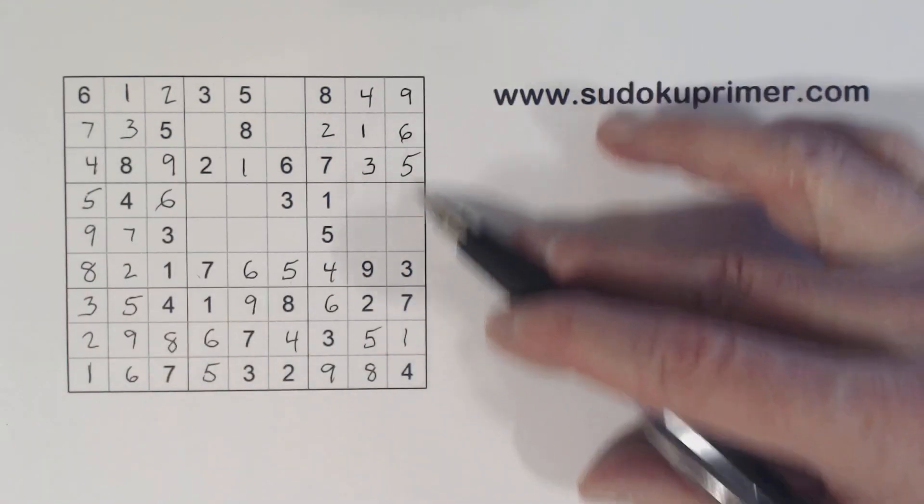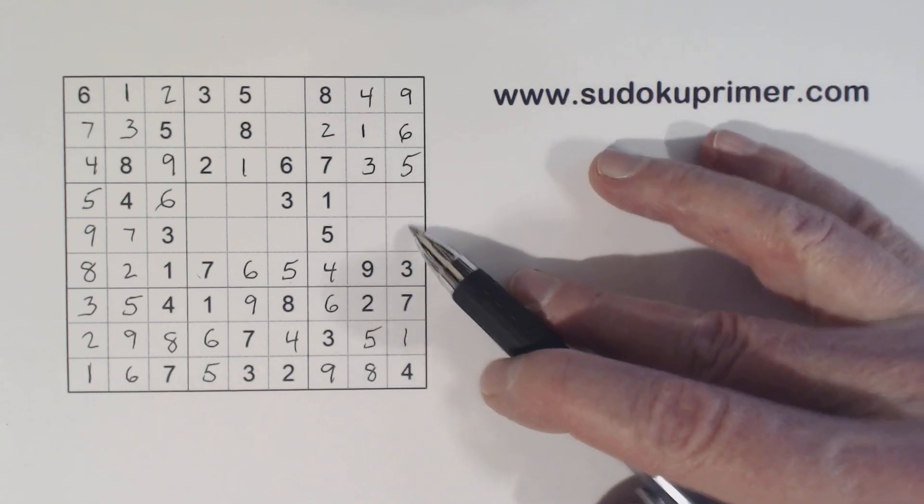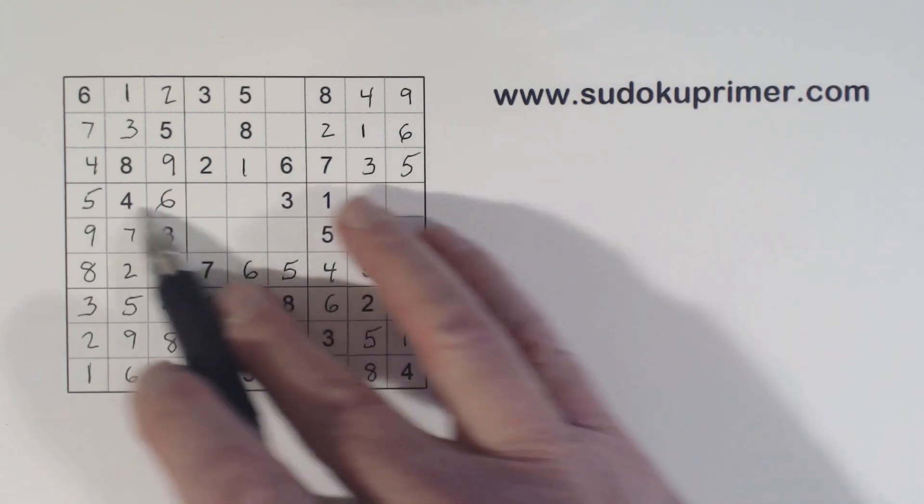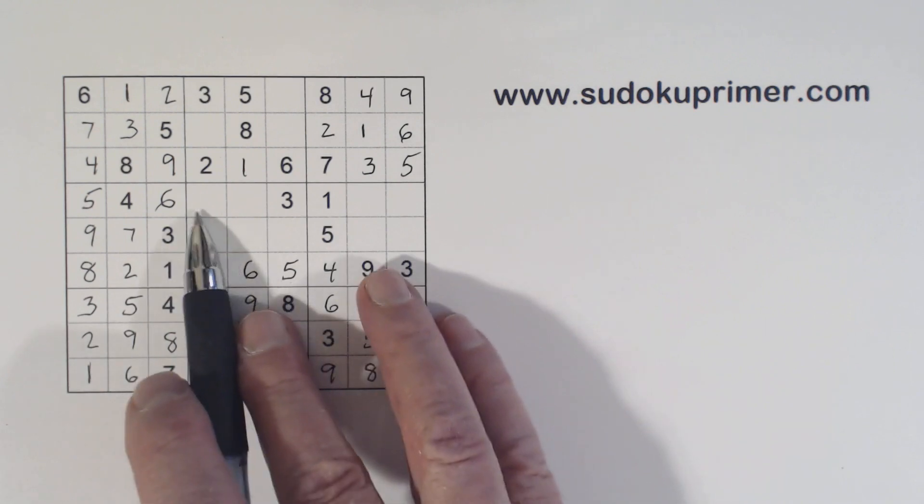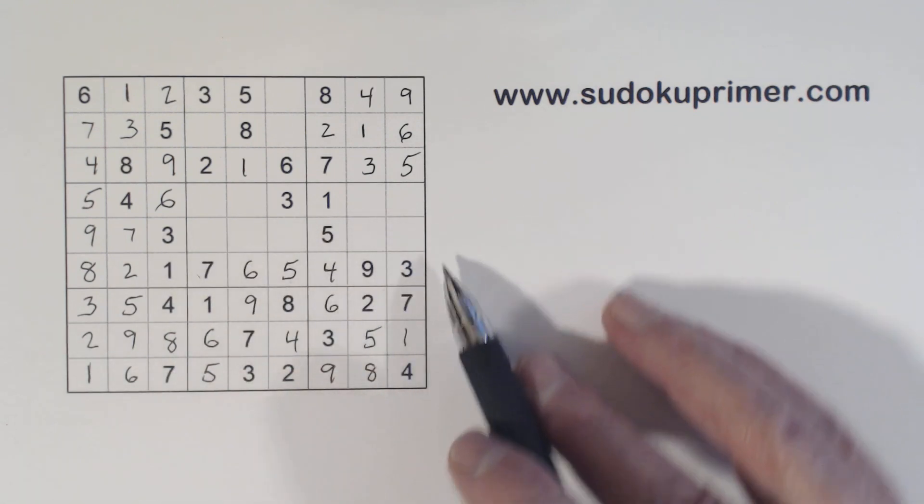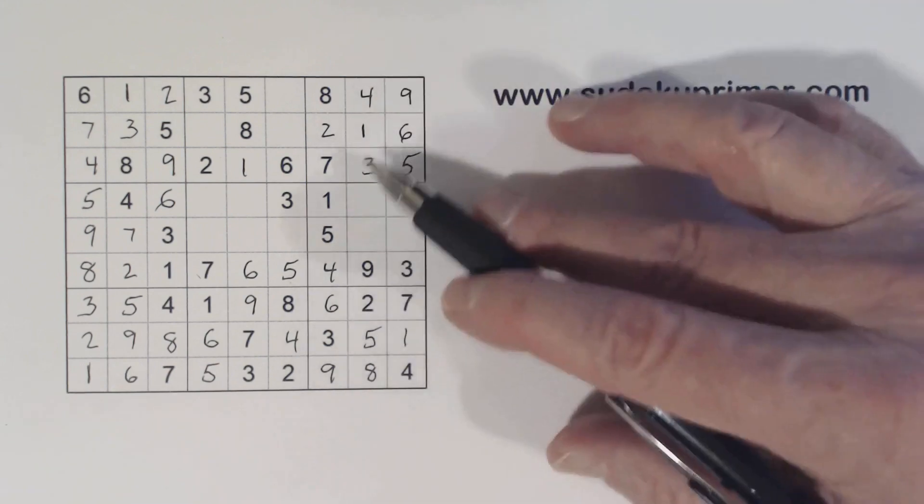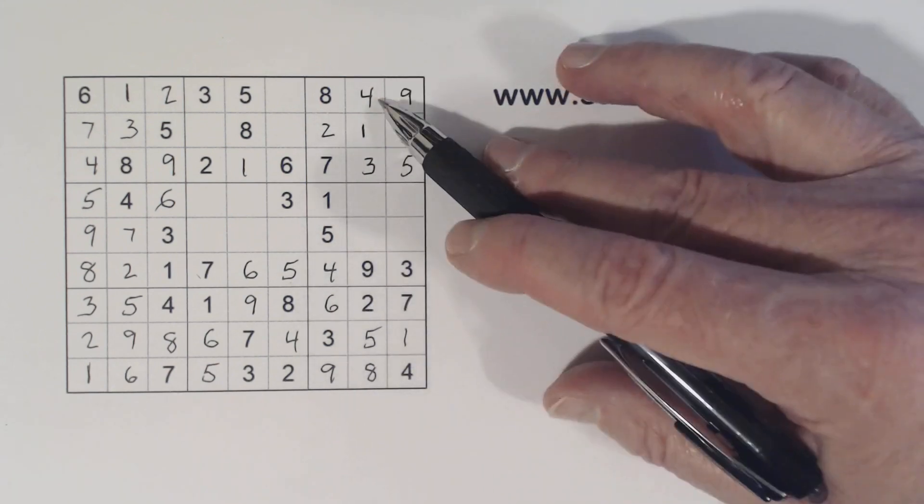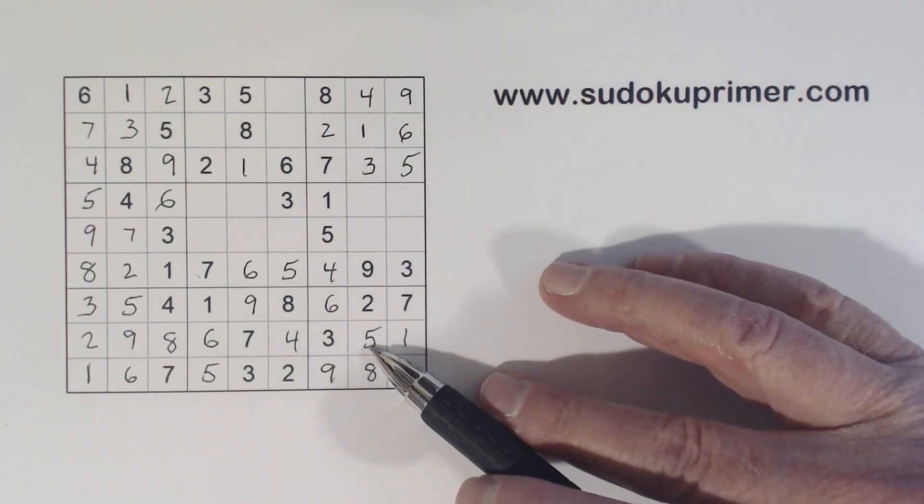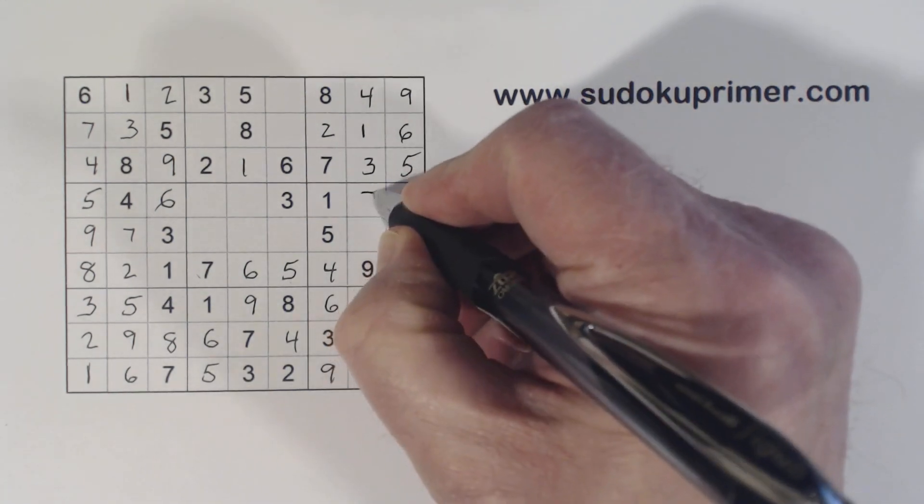We're missing 2 and 8 there. Can't solve those yet. Let's see. Let's see what we're missing in this column. 6, 7. We can solve them.